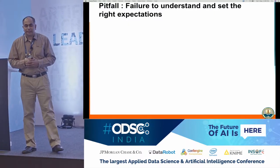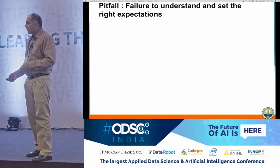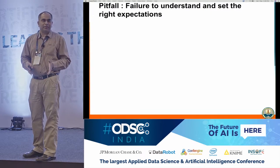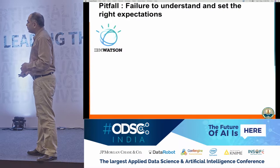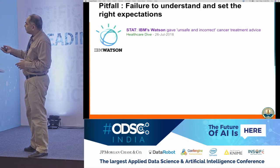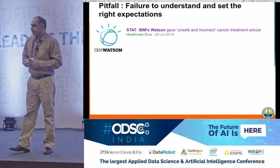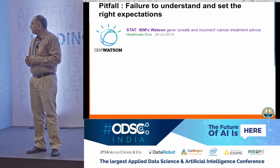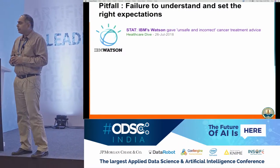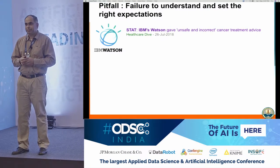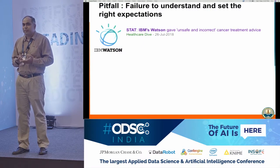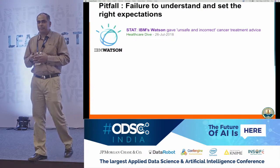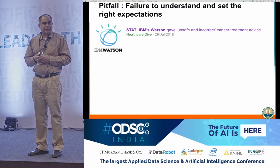The first pitfall is failure to set the right expectations. You've heard of IBM Watson — IBM's AI platform on which they developed specific solutions in certain verticals. Last year, end of July, an article appeared in Stat, an online site for medical information, saying that IBM Watson gave incorrect cancer treatment advice. Now, data scientists will think, so what's the big deal? Machine learning is not supposed to be 100% correct — if it can treat cancer 80% of the time, maybe that's good enough. But that's not the way medical professionals see it.